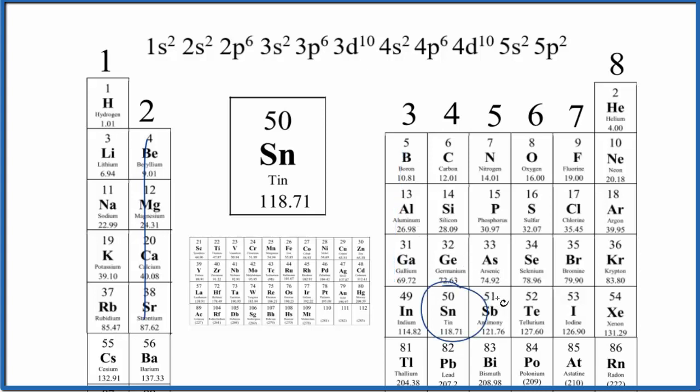But tin is what we call a post-transition metal. So let's look at the electron configuration and try to figure out how many valence electrons we have for tin.